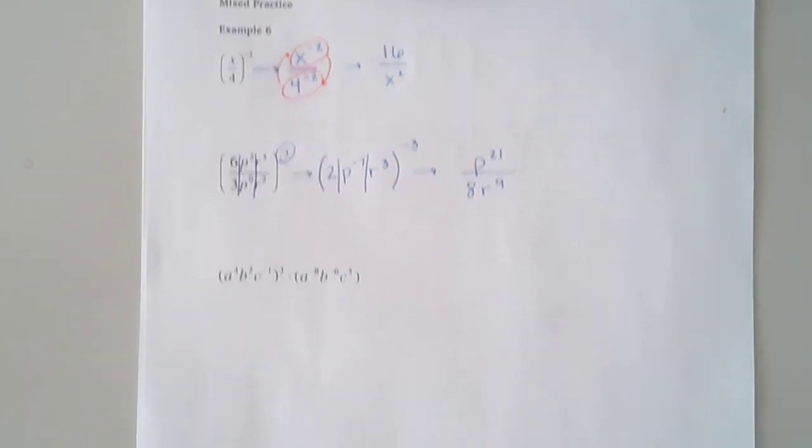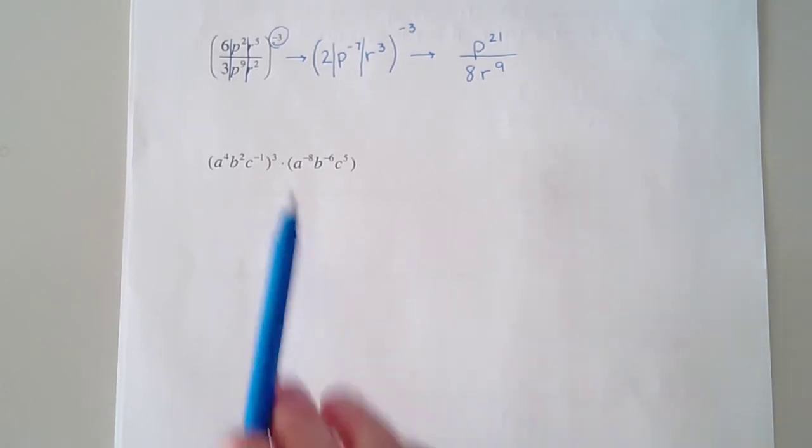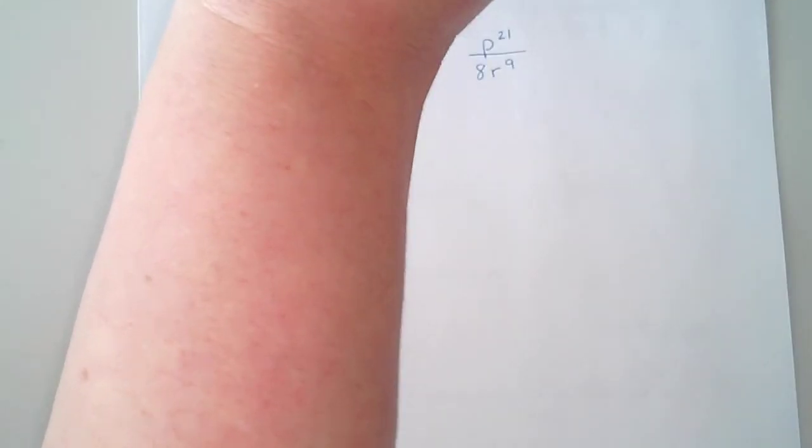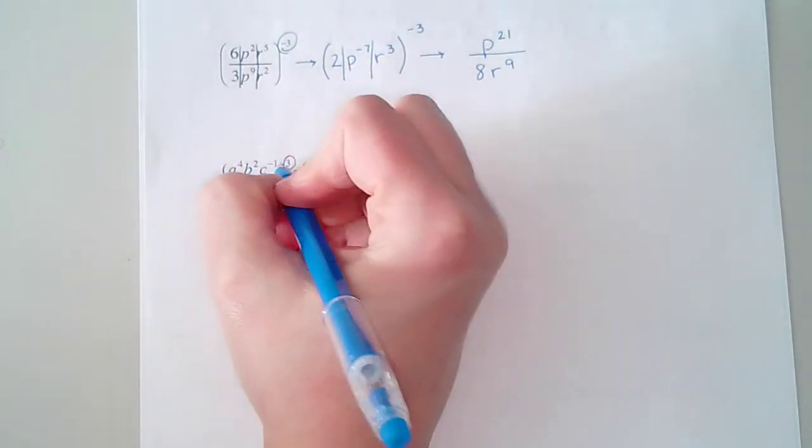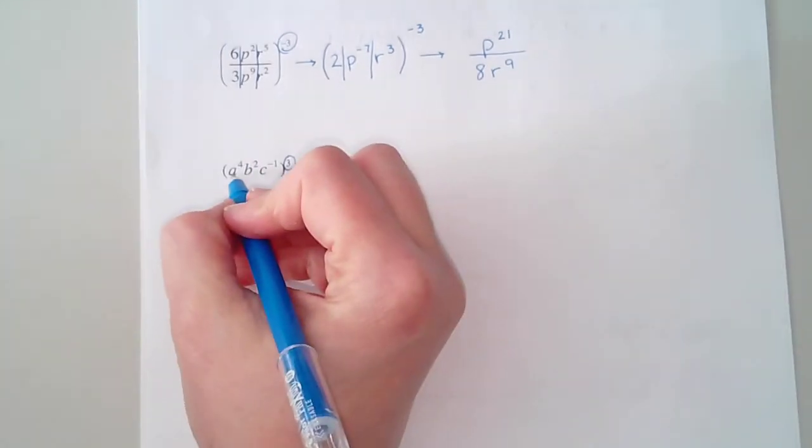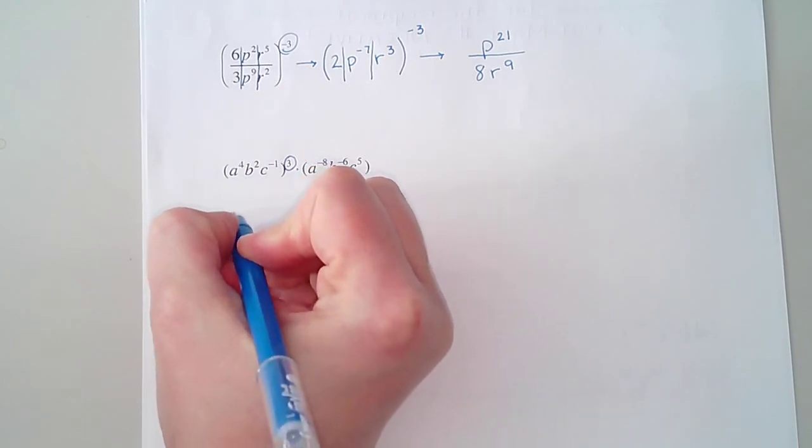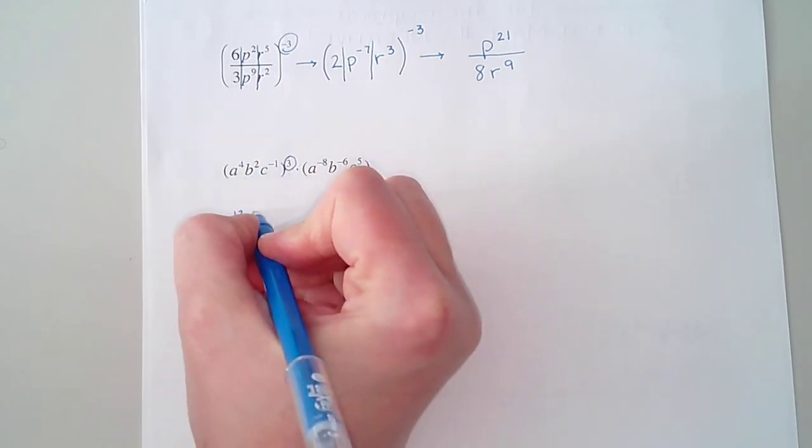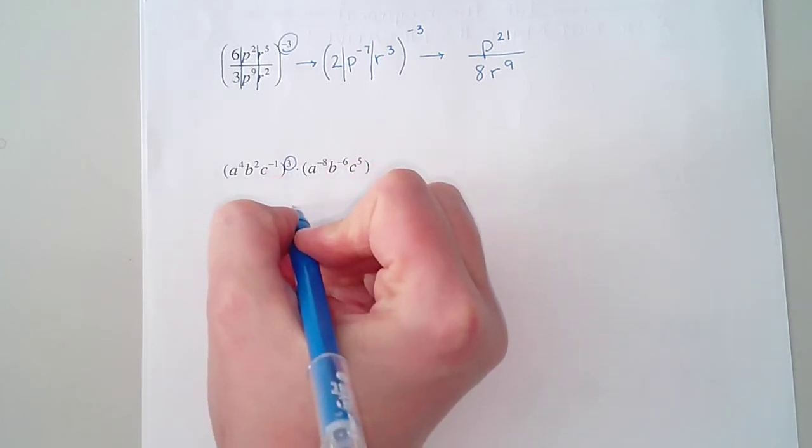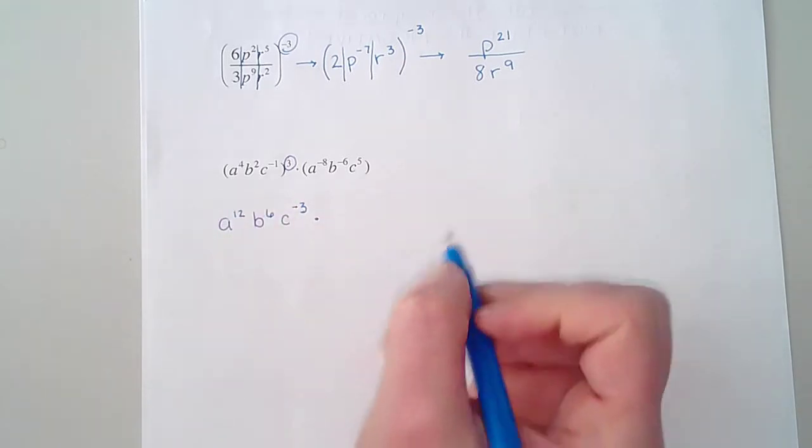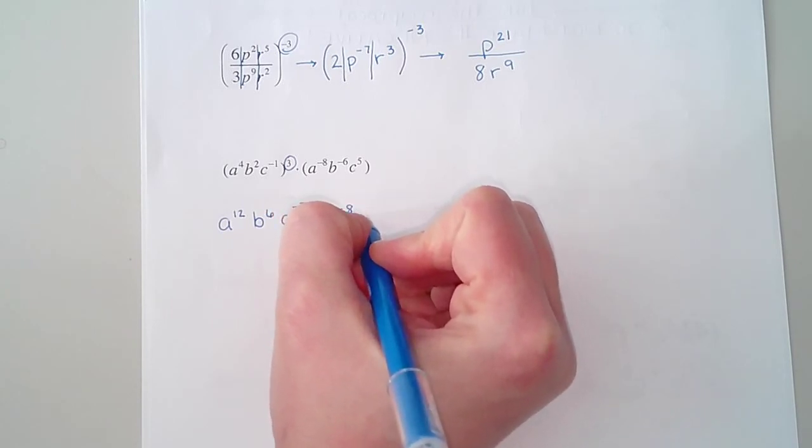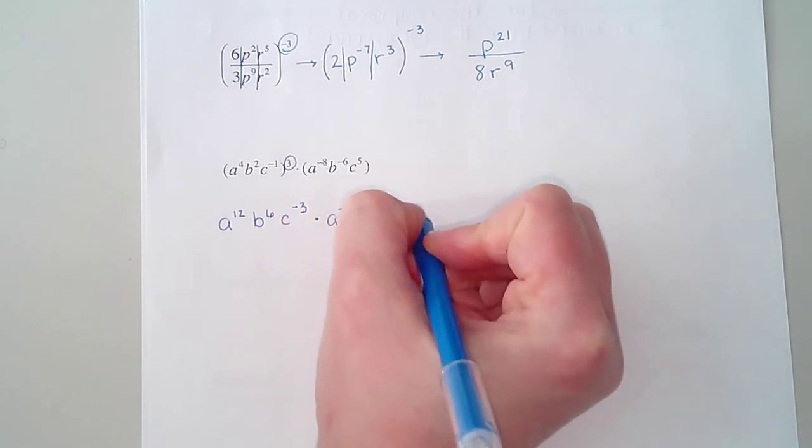Let's look at this third example. I've got a power of 3 out here and multiplication. Order of operations tells me that I need to deal with that power of 3 first. So I'm going to raise all of these to the power of 3. Just like before, I'm not going to worry about any negatives right now. Raising a power to a power means I'm multiplying. So that's going to become a to the 12th. 2 times 3 gives me b to the 6th. And that negative 1 times 3 gives me negative 3. And I am multiplying by a to the negative 8th, b to the negative 6th, c to the 5th.